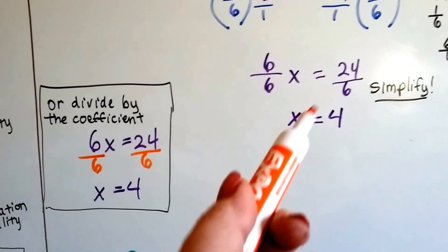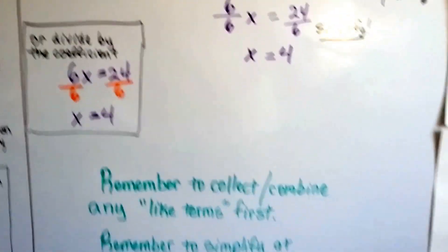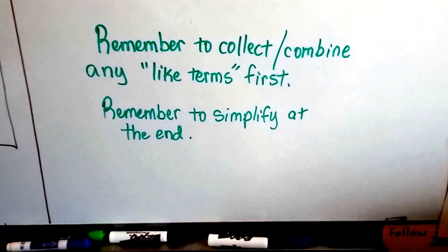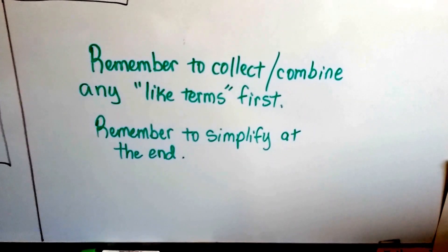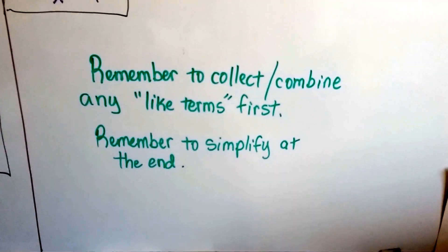And our answer is 4, just like it is here. So just remember to collect, combine any like terms first, and include their sign with them. And remember to simplify at the end.